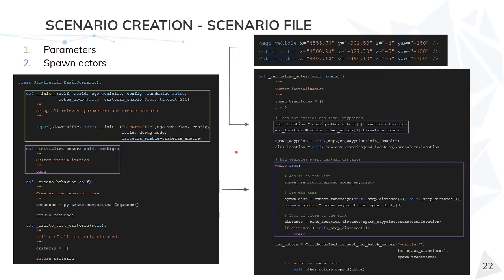When creating the actors, the ego vehicle is automatically created and we only have to set its location at the configuration file. For the slow traffic, we can either put exactly the initial positions of every actor or we can just create two points, the initial and final one of the slow traffic. Then for the slow traffic itself, we just create a loop between these two points, record the positions every certain distance, and then we just spawn all of them in batch.